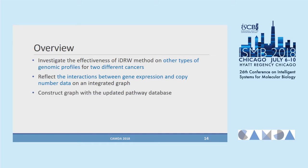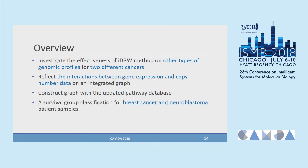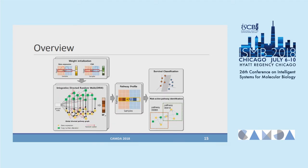We also constructed the graph using an updated pathway database, since the original integrated DRW methods used an outdated pathway database. We evaluate classification performance by addressing the problem of classifying samples into two survival groups for breast cancer and neuroblastoma patient samples. This is the overview of our method.